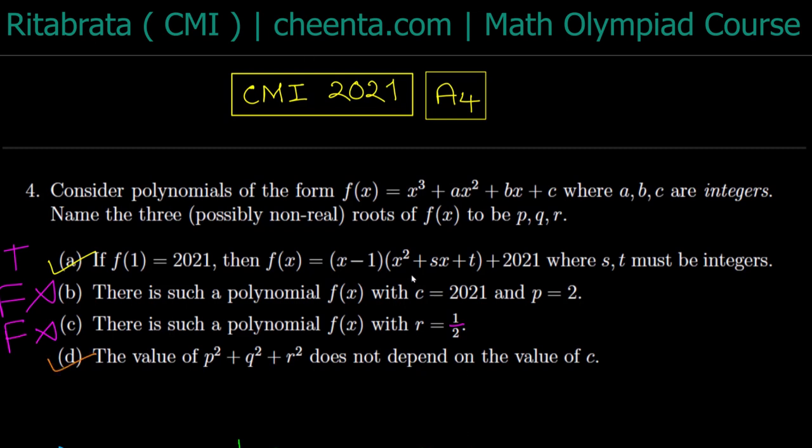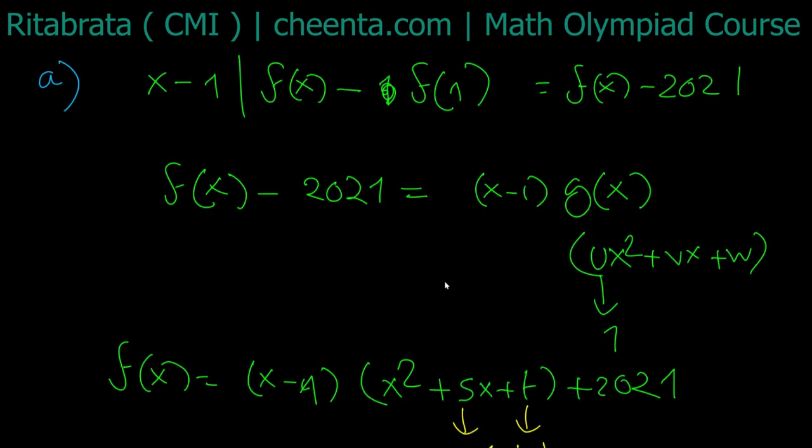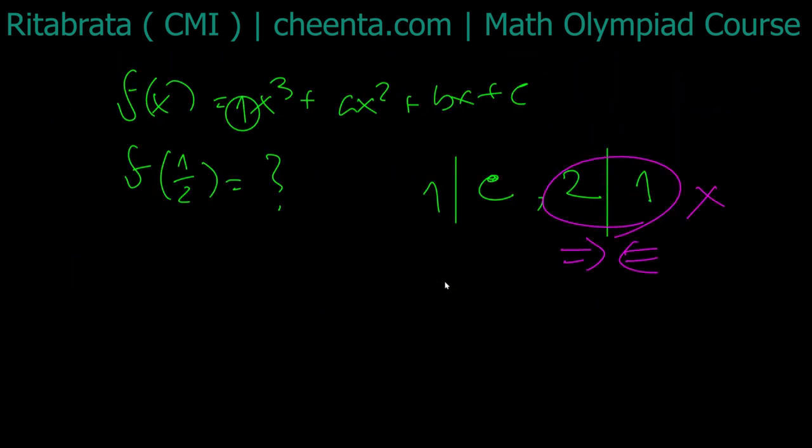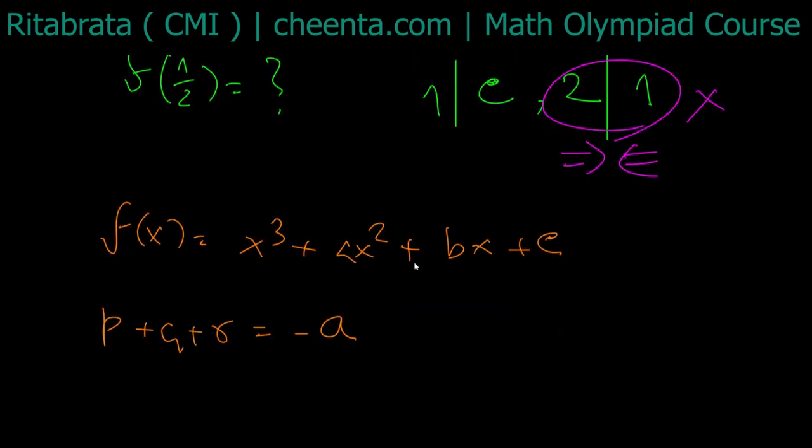Is part (d) true? This is a very easy example of Vieta's relations. As p, q, r are our roots, we have f(x) = x³ + ax² + bx + c. By Vieta's relations: p + q + r = -a, pq + pr + qr = b, and pqr = -c.